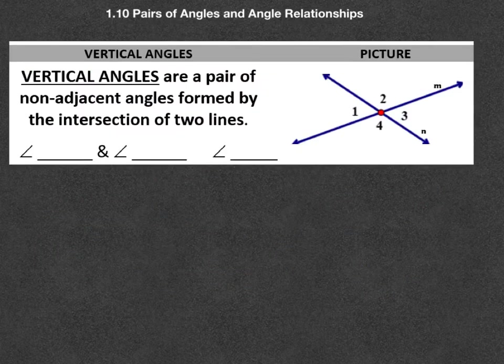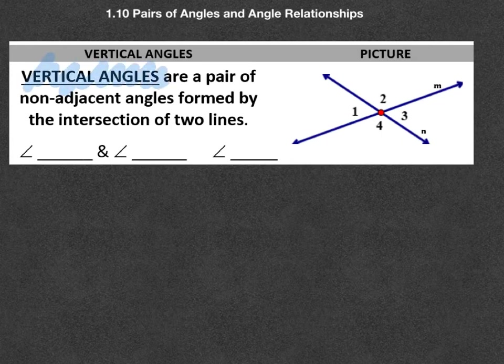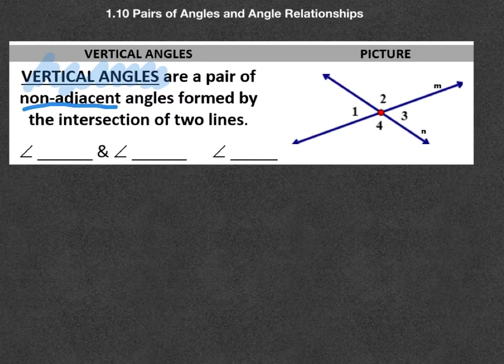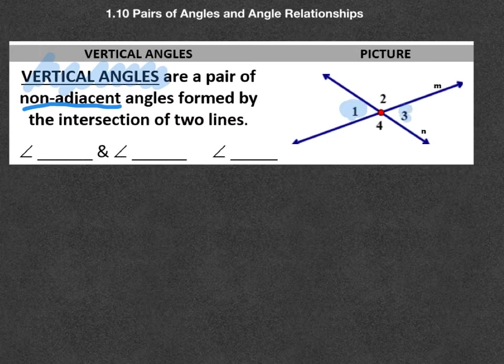The last of this type of pairs of angles are the vertical angles. Sometimes they're called opposite angles. You'll see why. Vertical angles are the ones that are formed by non-adjacents. So you know what adjacent means, it means side by side. So these ones will not be side by side. And they're formed when two lines intersect, just like these two over here. See how these guys have intersected each other.